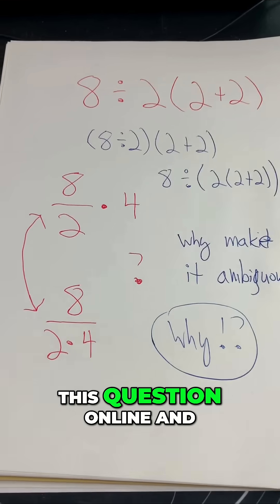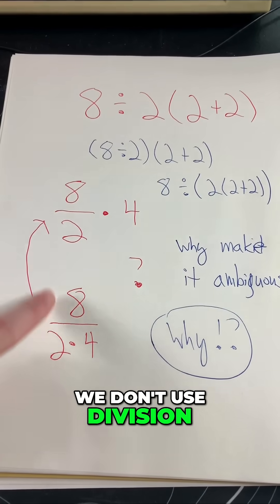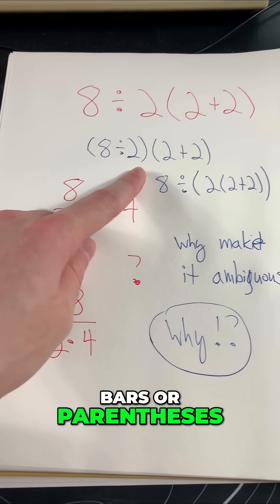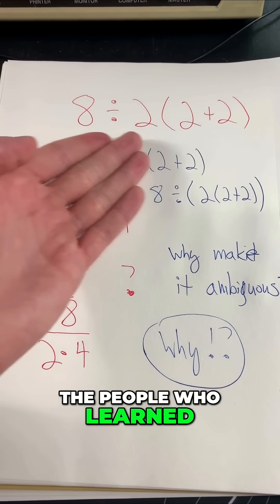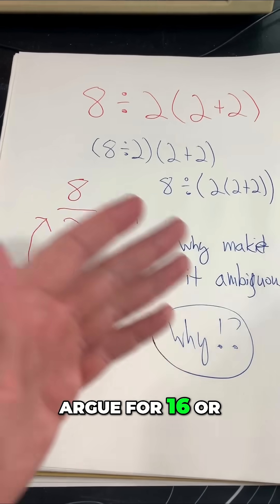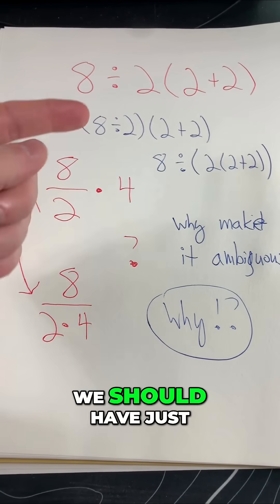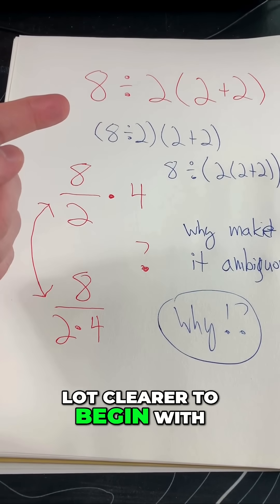But when we put this question online and we don't use division bars or parentheses, all of a sudden all the people who learned it one way or the other are going to argue for 16 or for 1, when in reality we should have just made the question a lot clearer to begin with.